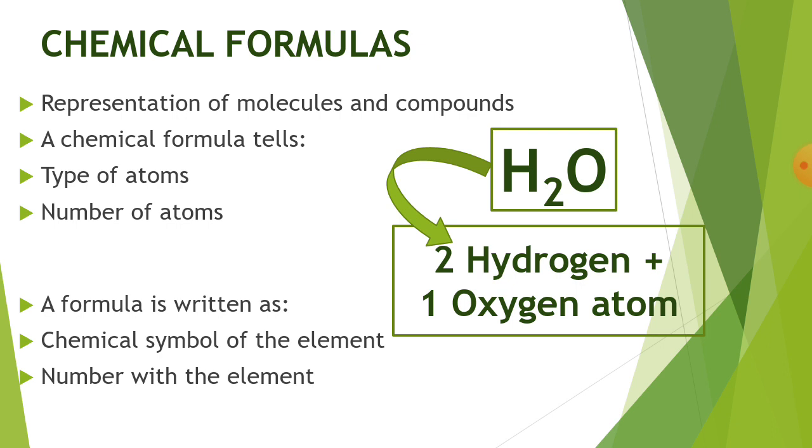A chemical formula tells us two things: the type of atoms and the number of atoms. A formula is written as chemical symbol of the element. Along with it, a number with the element is written.